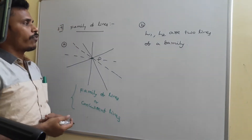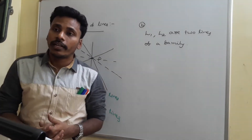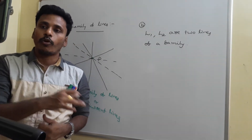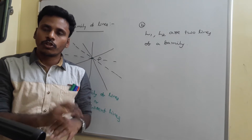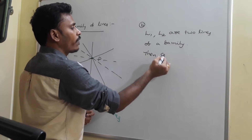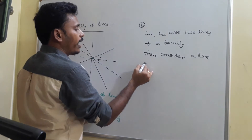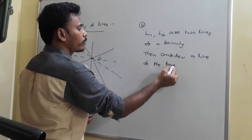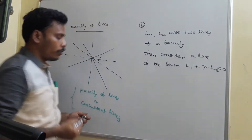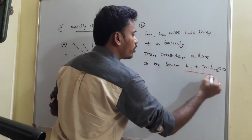If L1 and L2 are two lines of a family, there exist infinite number of lines in the family. I want to identify any other line passing through the same point. For that, consider a line of the form L1 plus lambda times L2 equals 0.